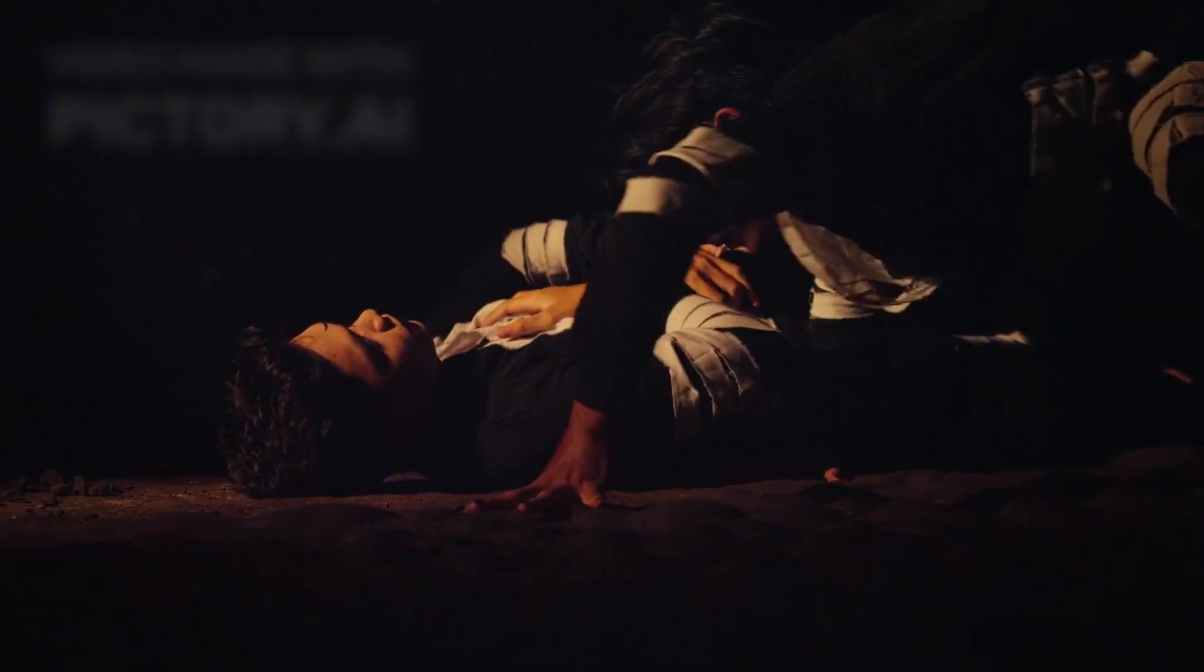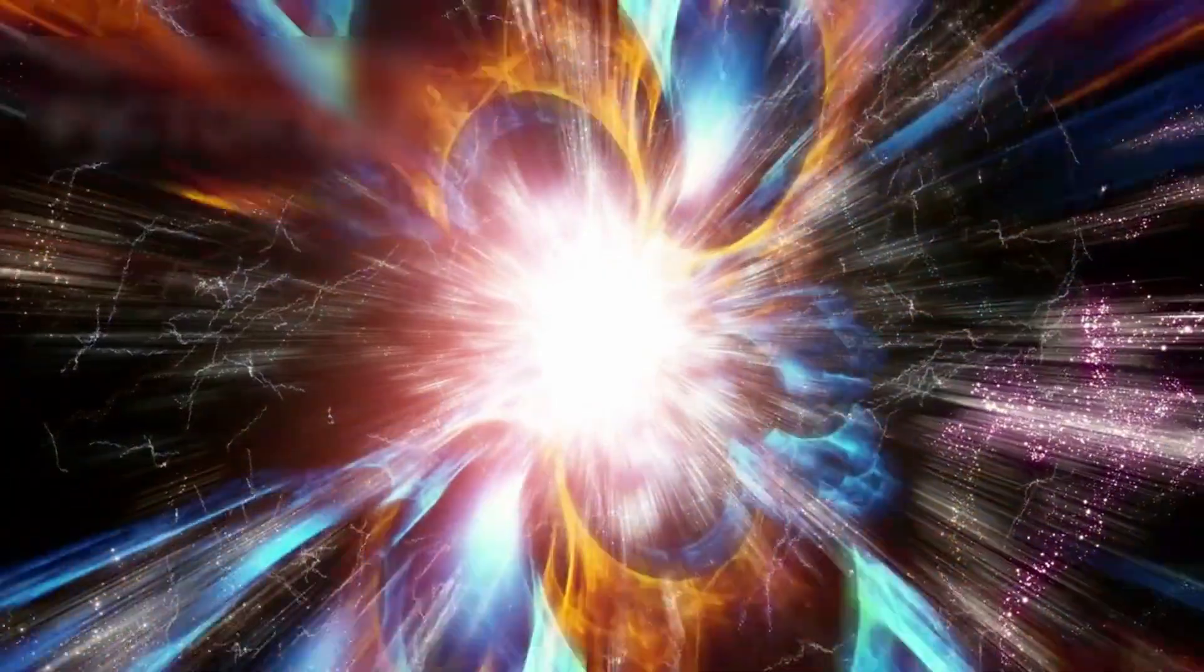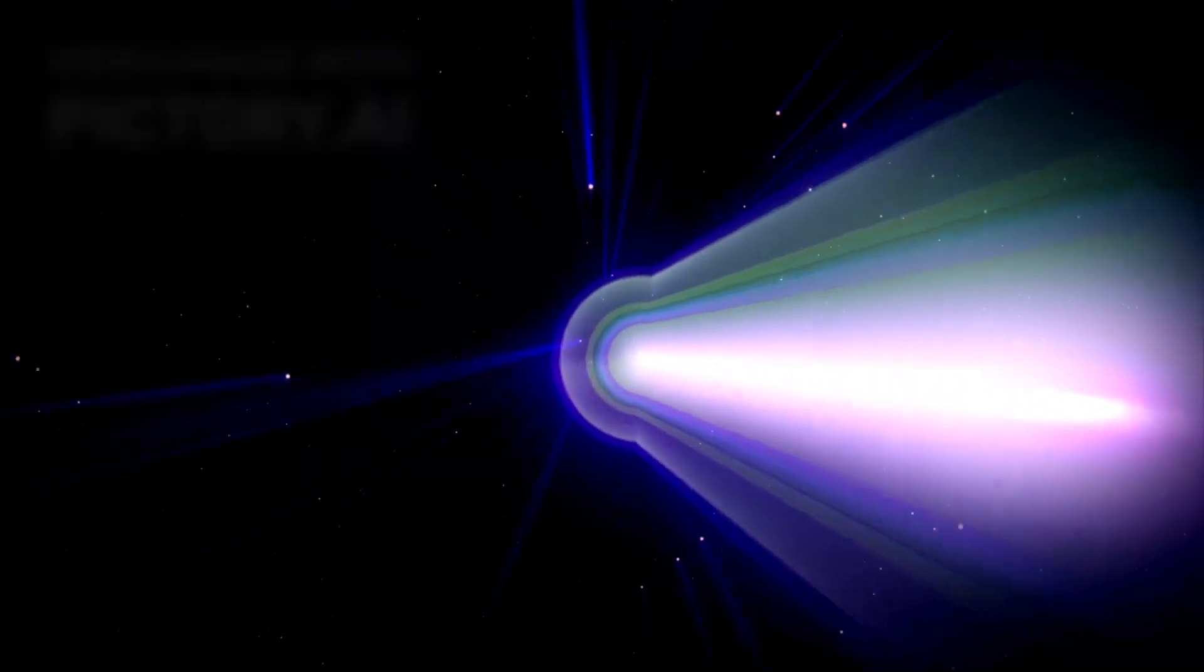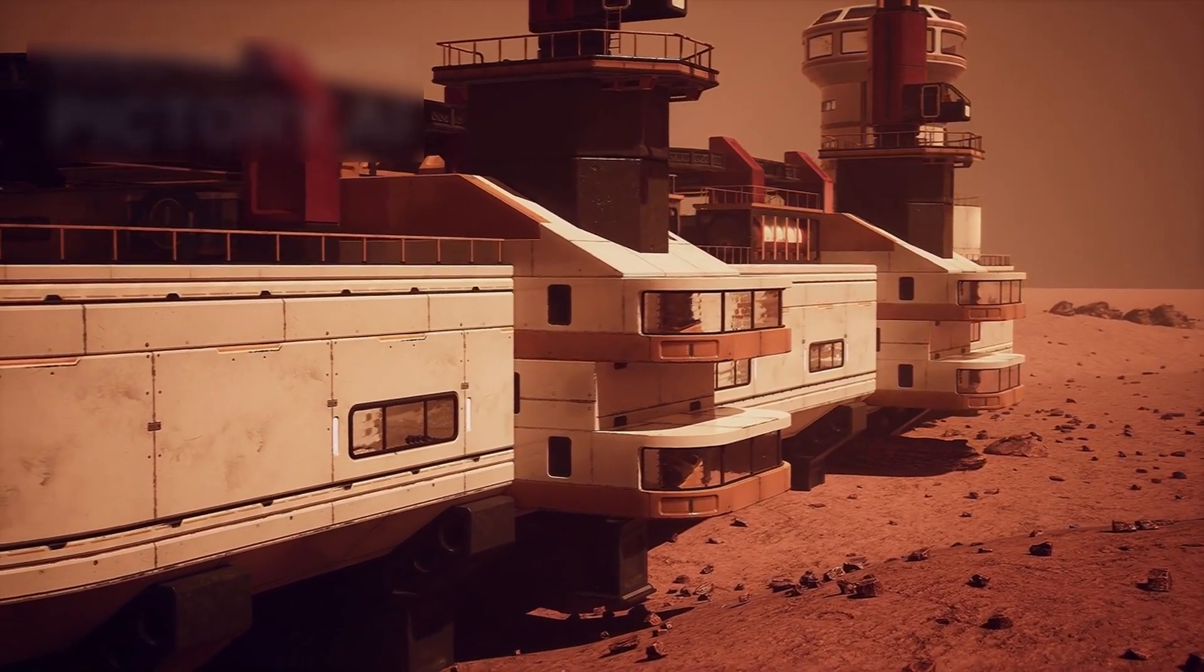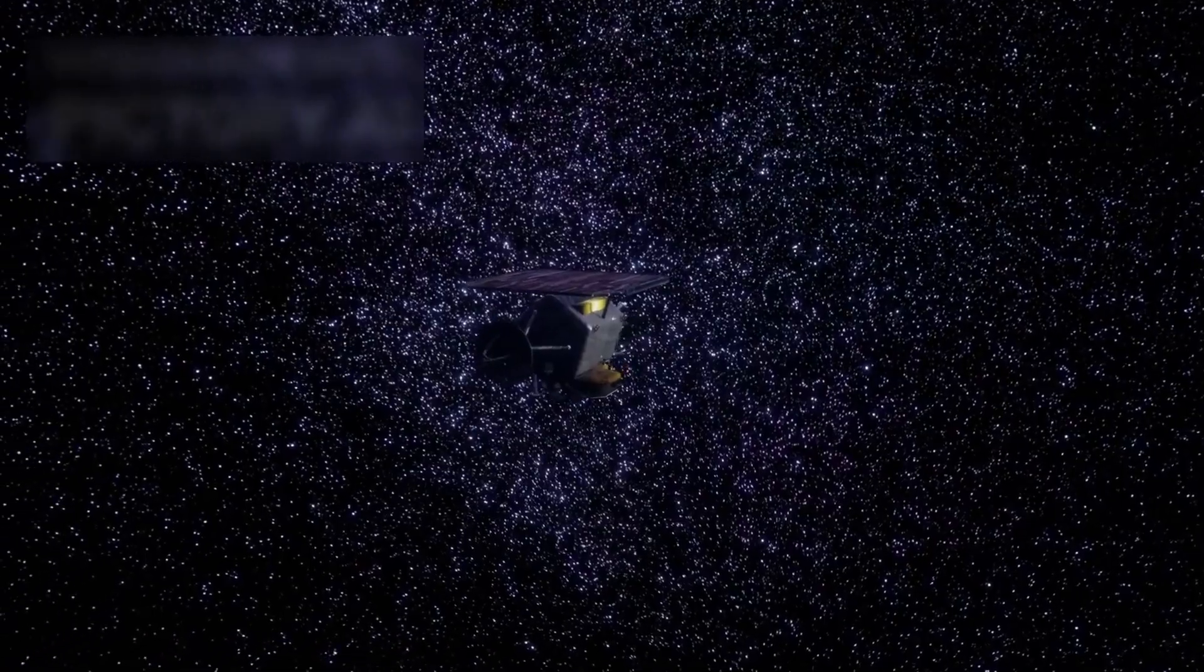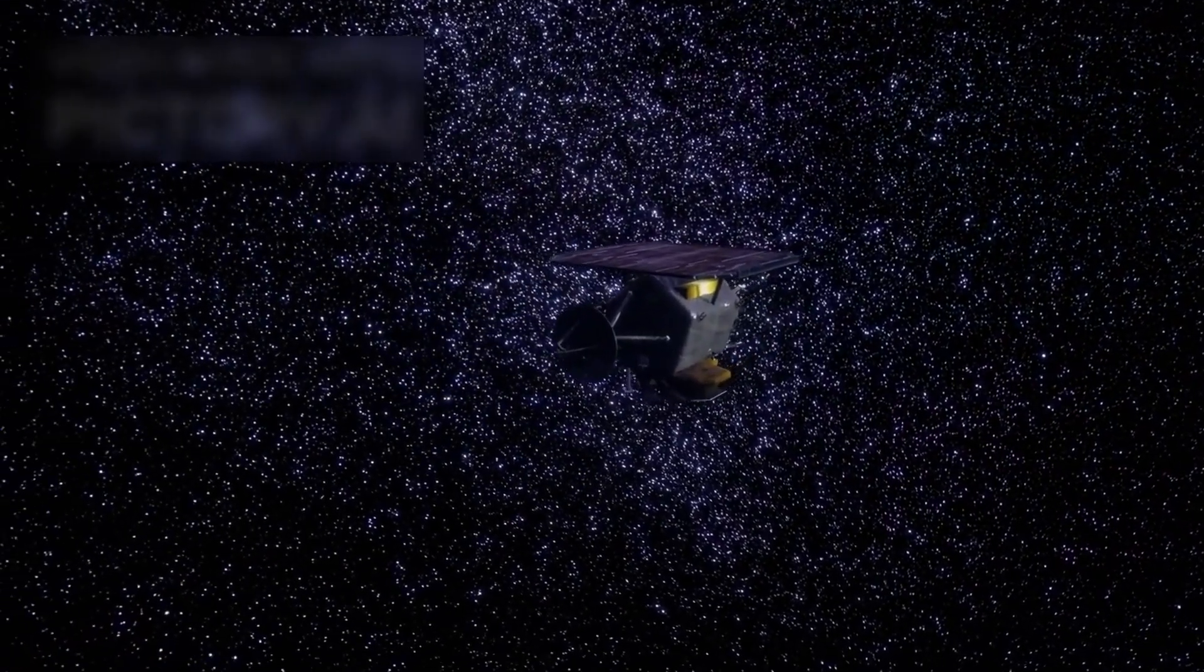Today, Voyager 1 travels at nearly 38,000 miles per hour. It will continue its journey for millions of years, long after its power fades and communication with Earth ends. One day it may pass within a few light years of another star system. By then, humanity itself may be unrecognizable or gone entirely. Yet Voyager will remain, a silent artifact of our first attempt to reach beyond the sun.